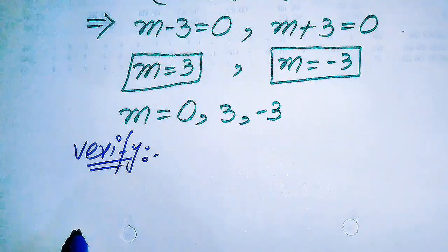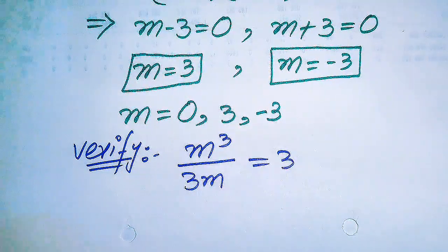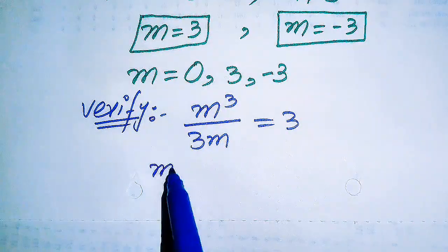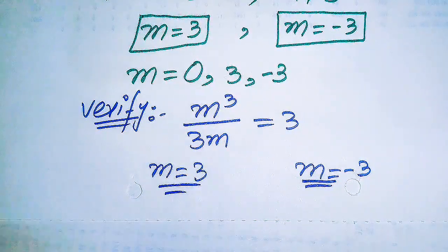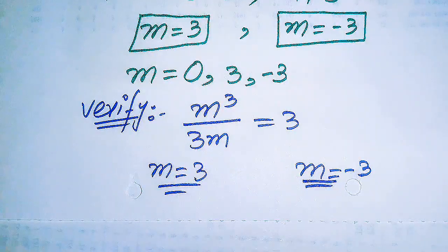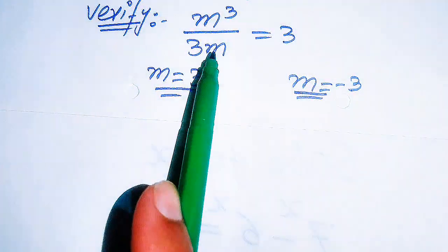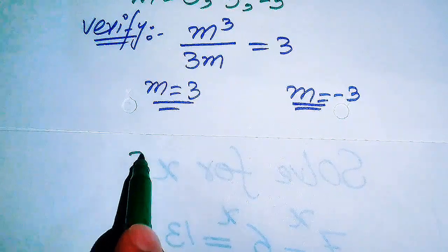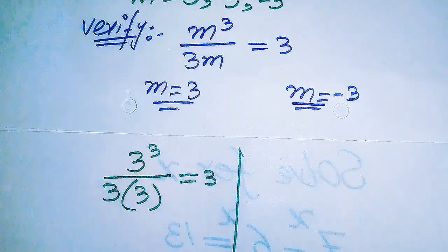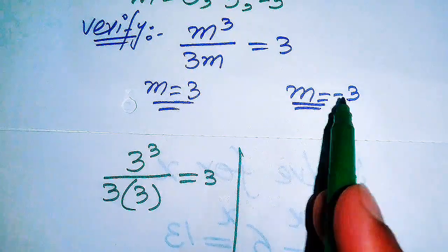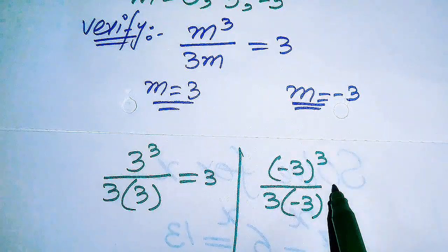In the next step we need to verify that these roots satisfy the given equation. The given equation is m cubed divided by 3m equals to 3. We verify m equals plus 3 on one side, and m equals minus 3 on the other side. For the positive value m equals 3, we put it into the left hand side: 3 cubed divided by 3 times 3 equals to 3 or not.